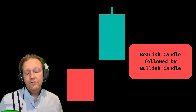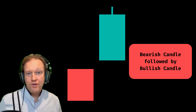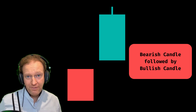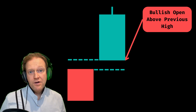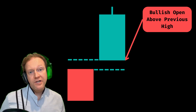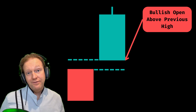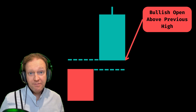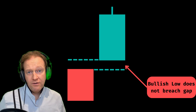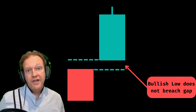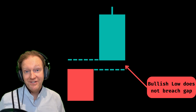Here's how we take those requirements and apply them at the TradeOxy platform for our scanners. First, we calculate to make sure that we have a bearish candle followed by a bullish candle. Next, we compare the open of the bullish candle against the previous open of the bearish candle and make sure that there is a gap between them. Then, we calculate the overall bullish candle and make sure that it never closes that gap.